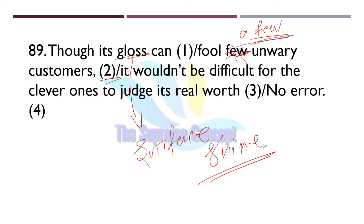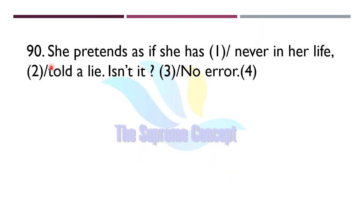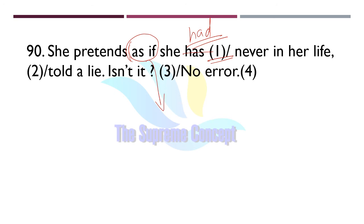Question number 90: 'She pretends as if she has never in her life told a lie.' The error lies in part number one — instead of 'has', we will use 'had'. When 'as if' is used in a sentence, it shows an unreal situation in the present, and it must be followed by a past conditional tense. So 'had' is used to make it past.